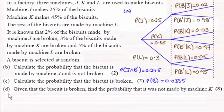Hi there. Now for the last part of this question we're told that a biscuit is selected at random and given that the biscuit is broken, find the probability that it was not made by machine K.